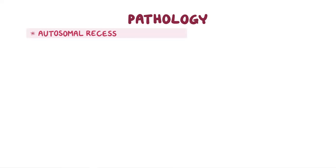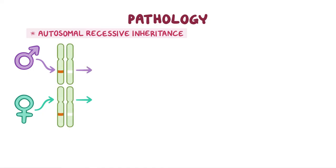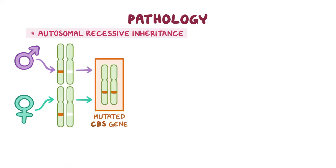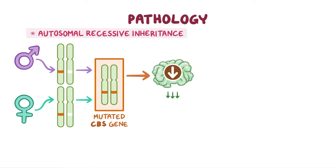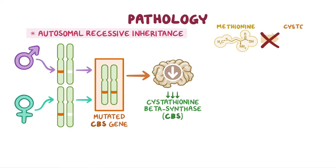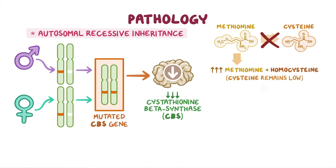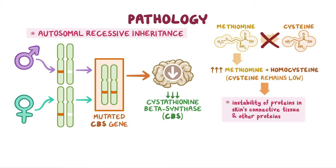Classical homocystinuria is caused by mutations in the CBS gene and follows autosomal recessive inheritance. An individual must inherit a copy of the mutated CBS gene from both parents to be affected by the disorder. A mutated CBS gene decreases activity of the enzyme cystathionine beta-synthase. Without a properly functioning CBS enzyme, methionine cannot easily be converted to cysteine, causing methionine and homocysteine to increase while cysteine levels remain low. Altered concentrations of these amino acids can interfere with the stability of important proteins in the skin's connective tissue, leading to problems such as skeletal abnormalities and blood clots.